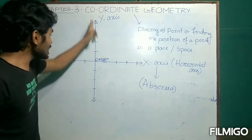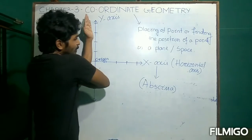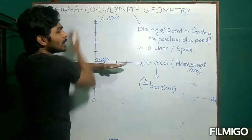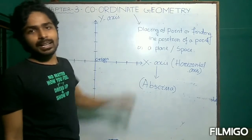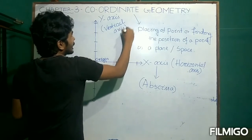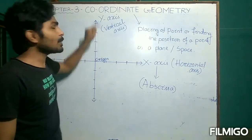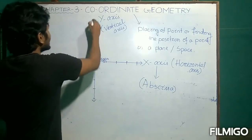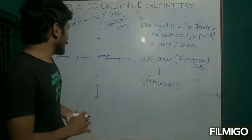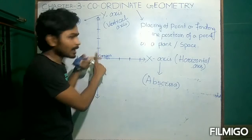Similarly, the y-axis is perpendicular to the base. Hence the y-axis is known as the vertical axis. The other name of the y-axis is ordinate. The point where both the x-axis and the y-axis intersect each other is called the origin.